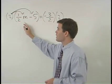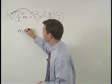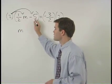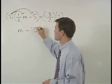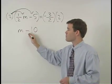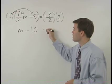2 times 1 half m is just m. And 2 times negative 5 is negative 10. So we have m minus 10 on the left side of the equation.